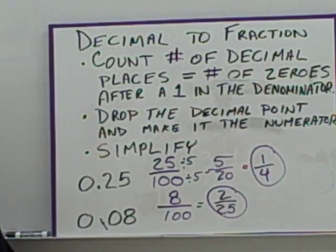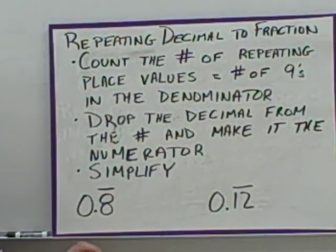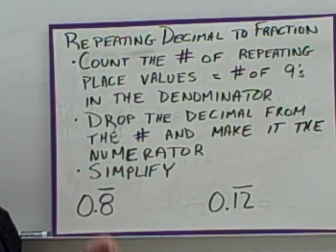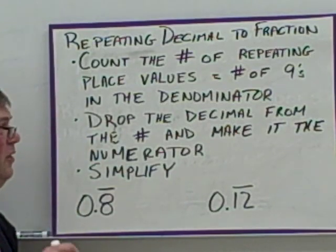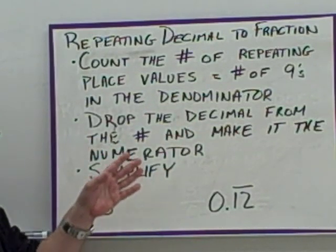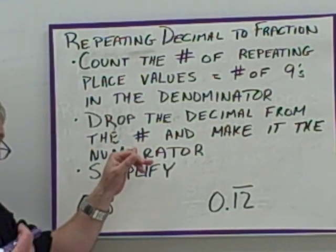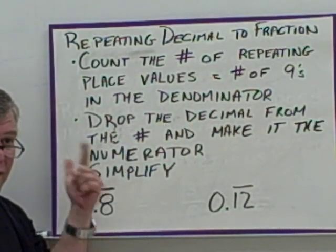When you've got a repeating decimal and need to convert it to a fraction, the process is slightly different. You count the number of repeating place values — that equals the number of nines in the denominator, only nines, no ones. Drop the decimal point from the number to make it the numerator, then simplify just like before.